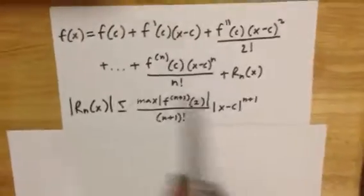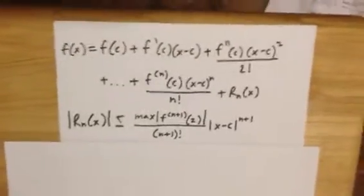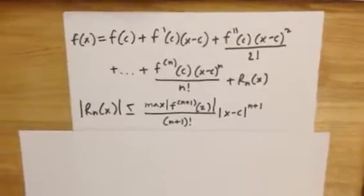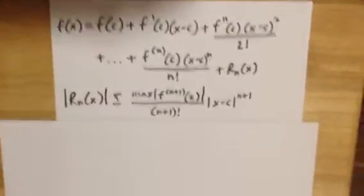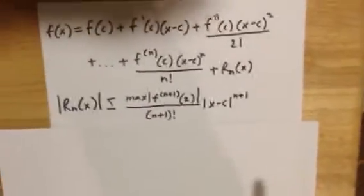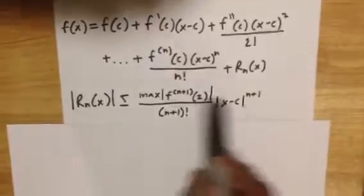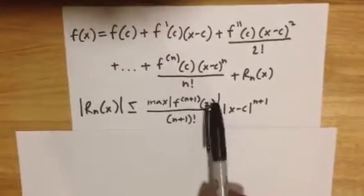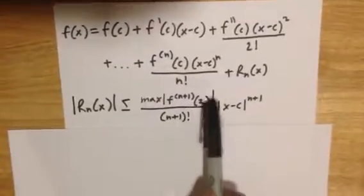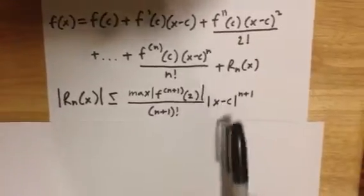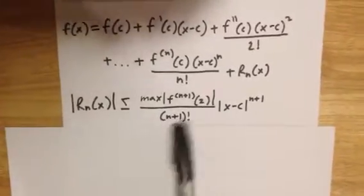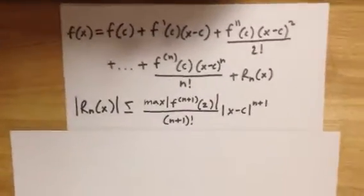So this big mess here is the Lagrange error bound, and we will be going through each part of it separately. But first, always remember that we are trying to maximize this. Therefore, we will be trying to maximize this because it is in the numerator.